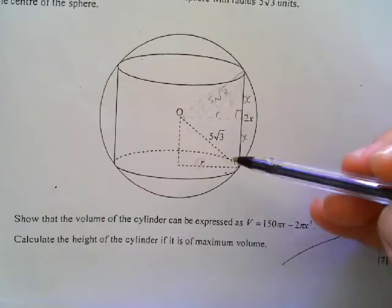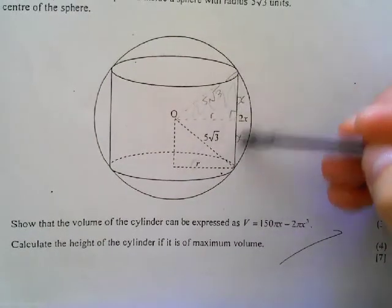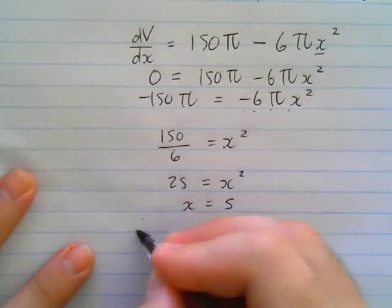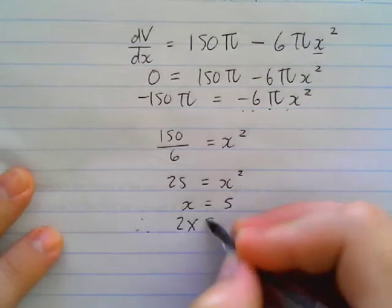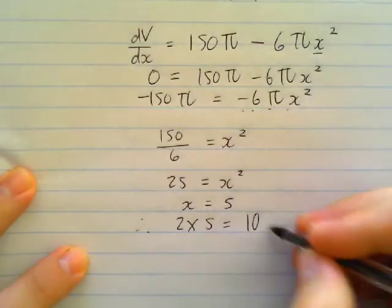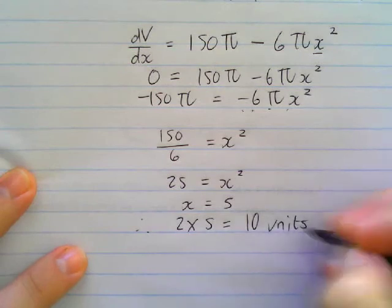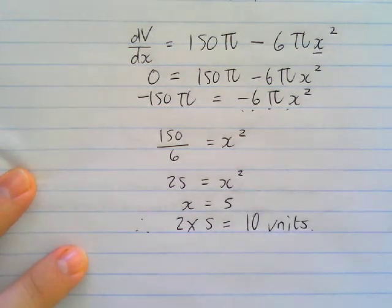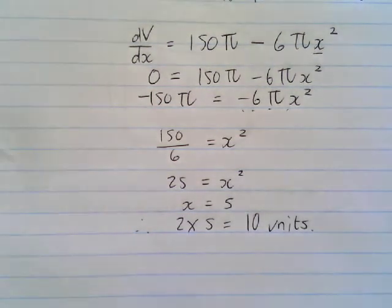We're not quite there yet. If we wanted to work out the height of the cylinder, our height is 2 times x. So therefore, the height of our cylinder will be 2 times 5 = 10. And let's just check our unit. We're just going to say 10 units as its height. Hopefully that question also assisted you in better understanding the maximization questions in calculus.